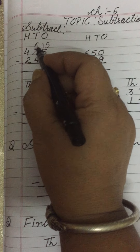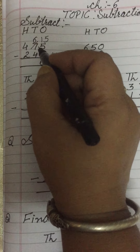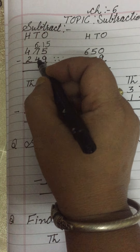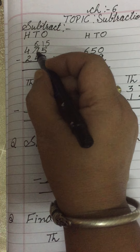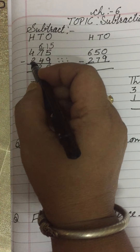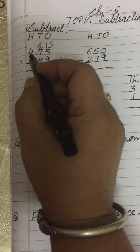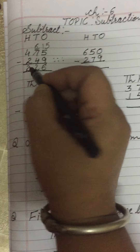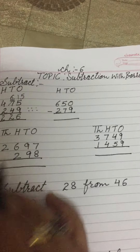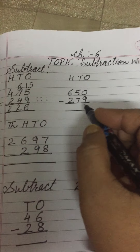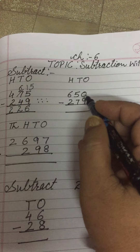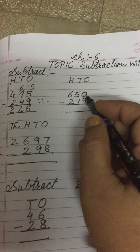Now here it is 6 and 4. We can easily subtract 4 from 6: 5, 6 — the answer is 2. Now again we subtract 2 from 4, and the answer is 2. So make sure the lower digit should always be smaller than the upper digit.